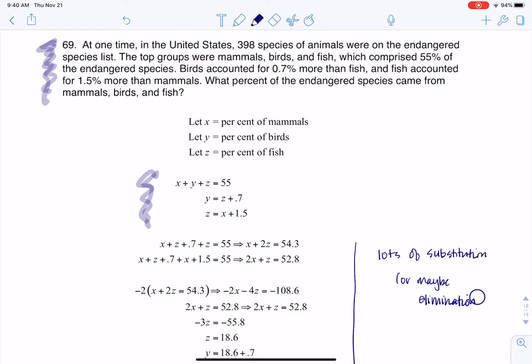So let's try and focus on that. If I jump to the end, the question says what percent of the endangered species come from mammals, birds, and fish. So that's why you see me calling x, y, and z the percent of mammals, the percent of birds, the percent of fish, because that's what I'm being asked to solve for.